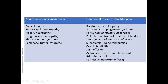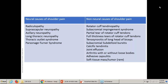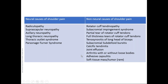Non-neural causes — which will be the main focus of today's presentation — include rotator cuff tendinopathy, subacromial impingement syndrome, partial or full thickness tears of rotator cuff tendons, tenosynovitis, subacromial subdeltoid bursitis, calcific tendinitis, joint effusion, arthritis with or without loose bodies, frozen shoulder or adhesive capsulitis, and soft tissue masses or tumors. Many pathologies can present similarly.